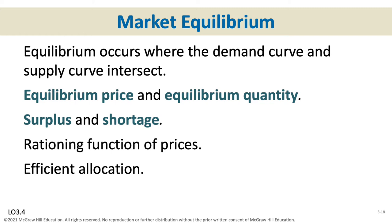If sellers try to charge a price higher than equilibrium, buyers won't pay that higher price and a surplus will begin to develop — the product sits on store shelves gathering dust. If the seller sets a price below equilibrium, everyone goes out and buys it quickly and there's a shortage, because the price is lower than expected. At equilibrium price and quantity, we won't have a surplus or a shortage.